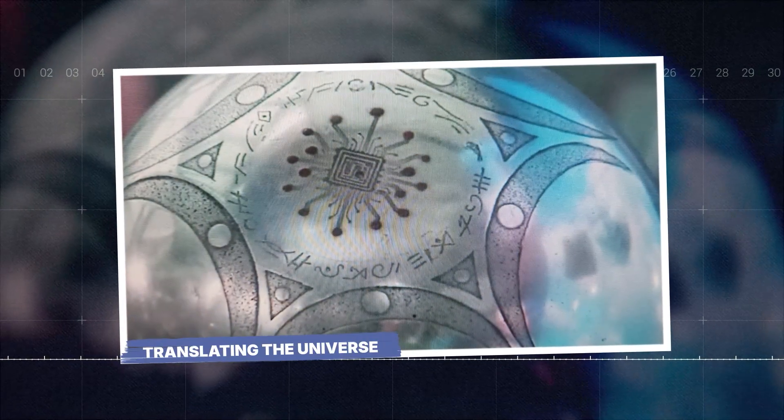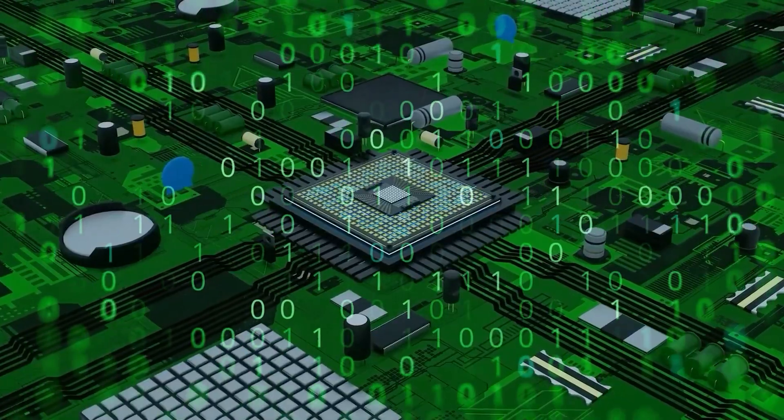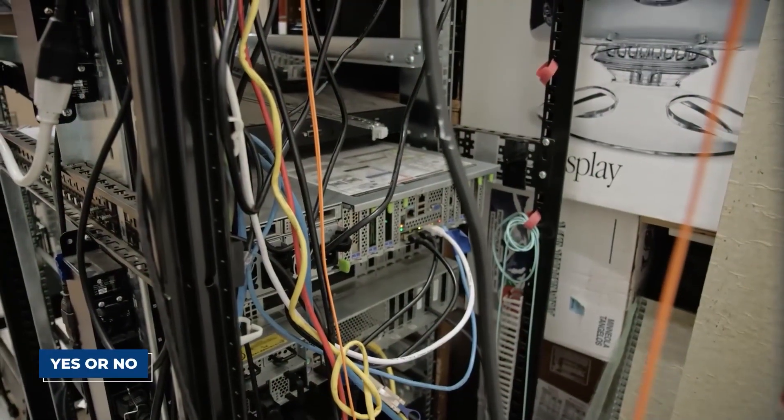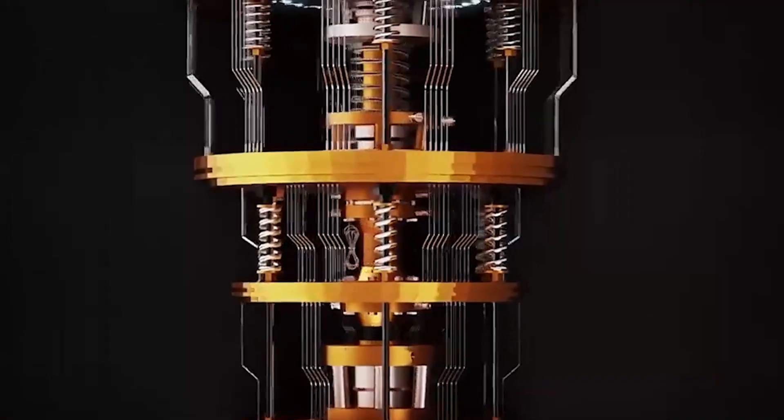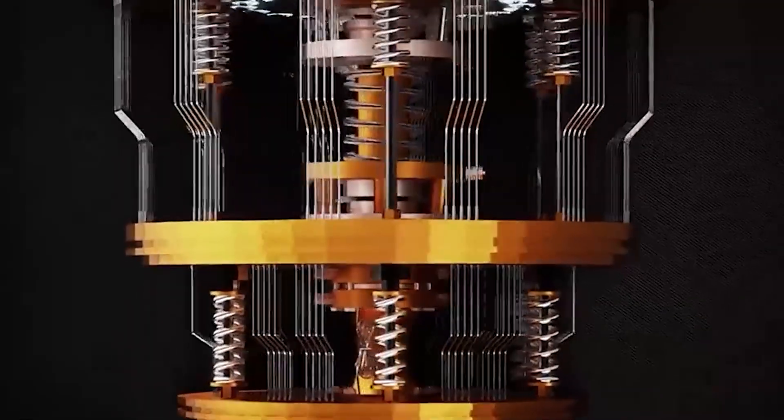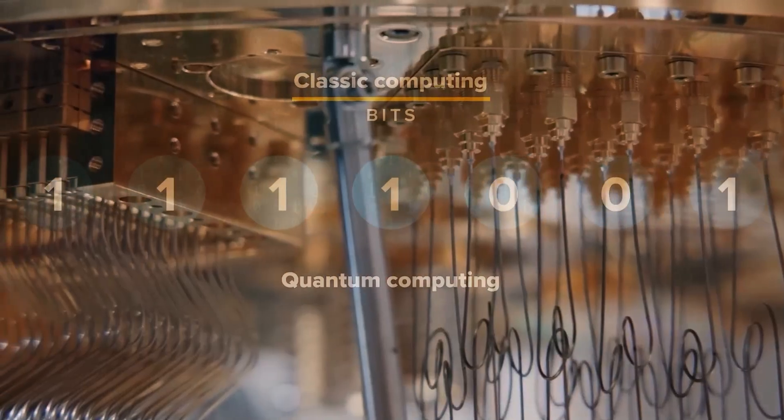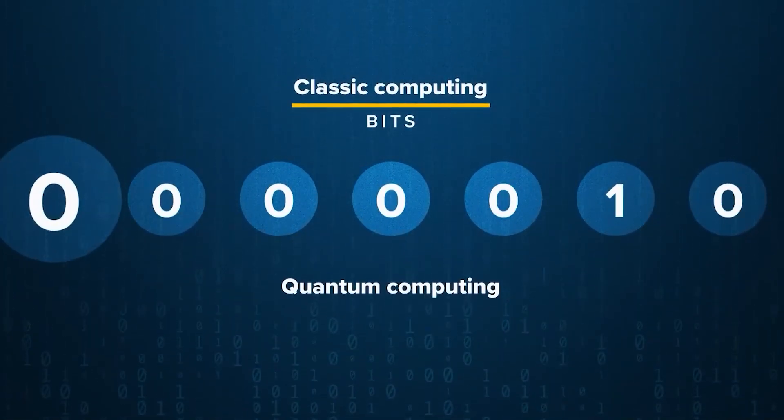Translating the Universe. Now, get this. A normal computer thinks in ones and zeros. Yes or no. On or off. A quantum computer is completely different. It thinks in possibilities. Its basic units, called qubits, can be a one, a zero, both, and everything in between all at the same time.